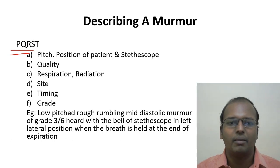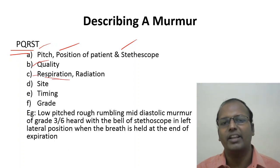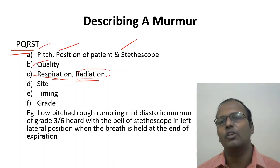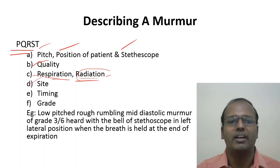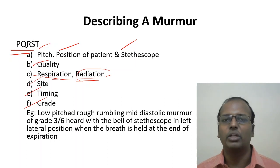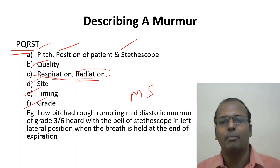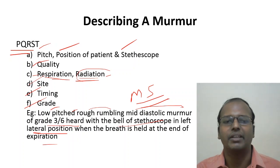To describe a murmur, use the mnemonic PQRST: Pitch, Position of patient and stethoscope (bell for low-pitched, diaphragm for high-pitched sounds), Quality, Respiration (respiratory variation), Radiation (e.g., MR radiates to axilla; aortic murmur radiates to carotids), Site (mitral, aortic, tricuspid area), and Timing (systolic or diastolic), plus grading. Example: 'Low-pitched, rough rumbling, mid-diastolic murmur of grade 3/6, heard with the bell of the stethoscope in the left lateral position, with breath held at end-expiration' — the classical description of mitral stenosis.